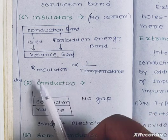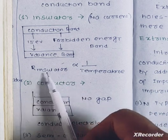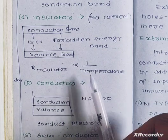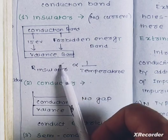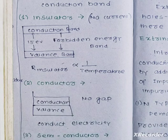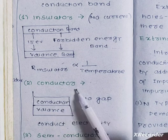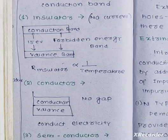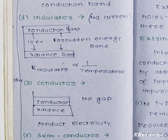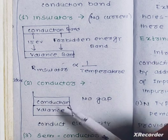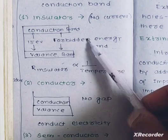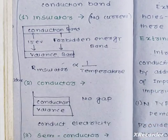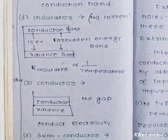In an insulator, the resistance is inversely related to temperature — when the temperature is increased, the resistance of the insulator will be reduced. Next is the conductor. In a conductor, there is no forbidden energy gap. The conduction band and the valence band overlap with each other, so conductors conduct electricity freely.